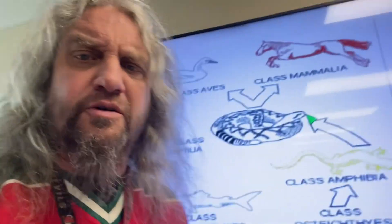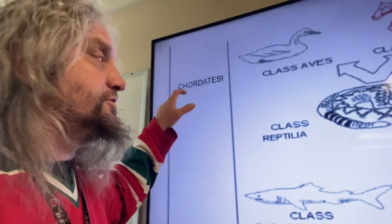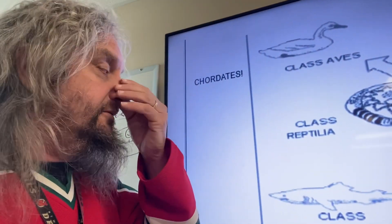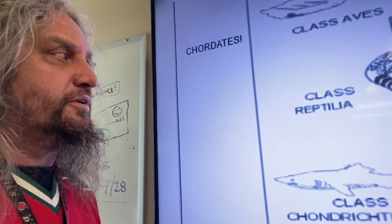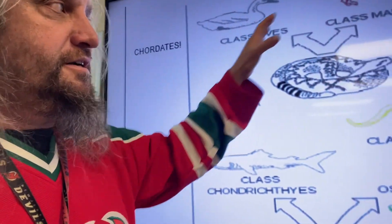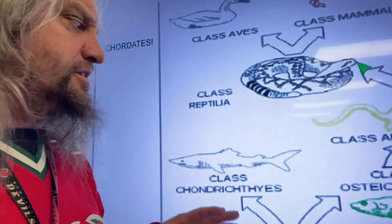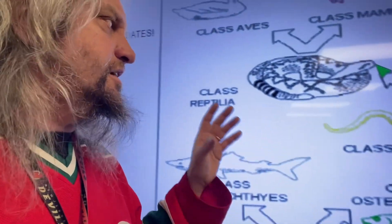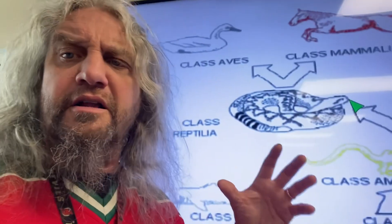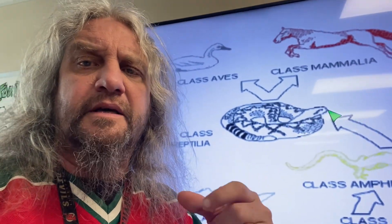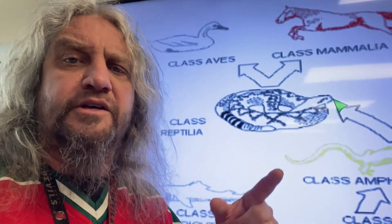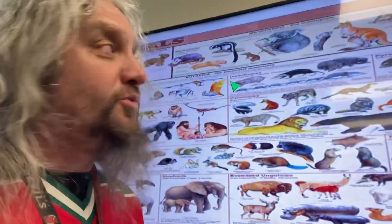All the animals — we're in the group that has backbones, the chordates. A spinal cord makes you a chordate. There are a bunch of different classes of chordates: all the fishes, all the amphibians, all the reptiles, all the birds — they're all chordates. They have backbones. But of all the chordates, we're in the class of mammals — 5,000 species of mammals and we're just one of them.